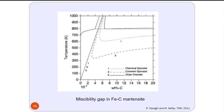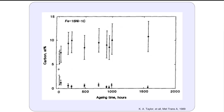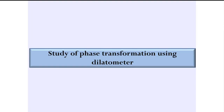People have calculated the miscibility gap in iron-carbon martensite for binary iron-carbon alloys. If other alloying elements are present, these phase boundaries would change. There are experimental results which show segregation of martensite into carbon-rich and carbon-lean regions. With this background in mind, we started studying the transformations in bainite.